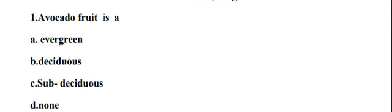Question number 1: Avocado fruit is a — options are: option A evergreen, option B deciduous, option C sub-deciduous, and option D none of the above. The right answer is option A, evergreen.